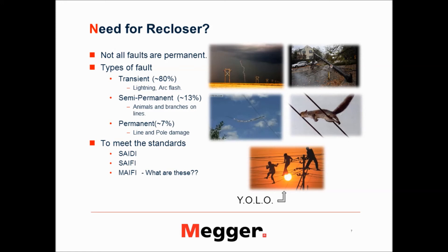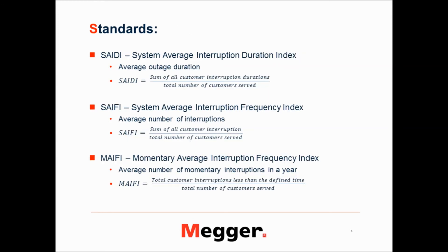Another important need for reclosers is to maintain standards like SAIDI and MAIFI. SAIDI stands for System Average Interruption Duration Index, and it tells you the average outage duration. It is a ratio of the sum of all customer interruption durations divided by the number of customers served. You want to keep this index within the threshold, because a higher index means more interruptions in your system, and generally customer satisfaction is very low when you have lots of interruptions.